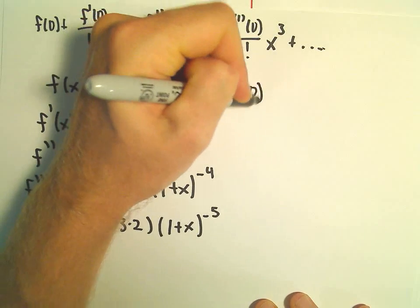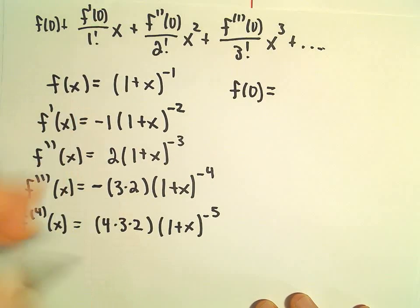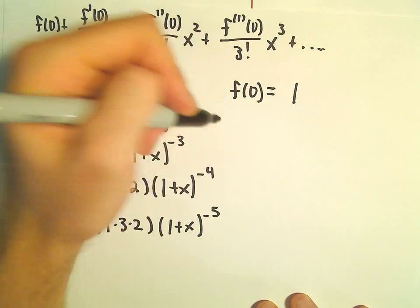A lot of times I don't multiply things out just because I think it's a little bit easier to see a pattern. So, alright, well, let's plug in our numbers. So f(0), we'll just get 1^(-1), which is 1.